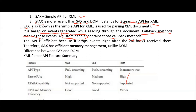The SAX API is efficient because it drops events right after the callbacks receive them. It doesn't keep anything in memory — as soon as these events are reached by the callback methods, these events are dropped. That's why SAX has efficient memory management compared to DOM.